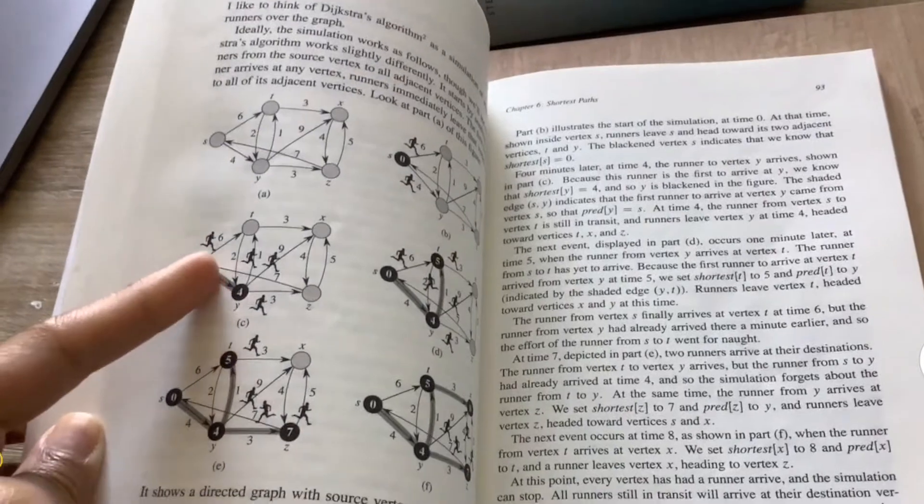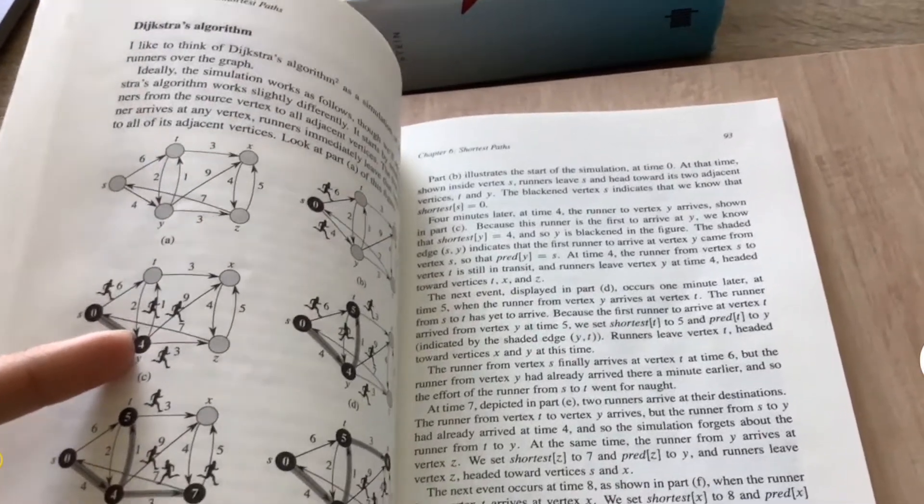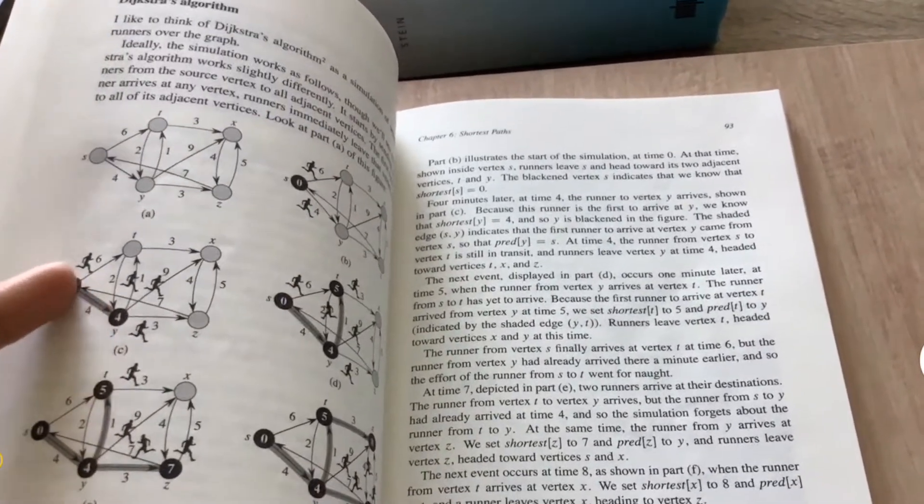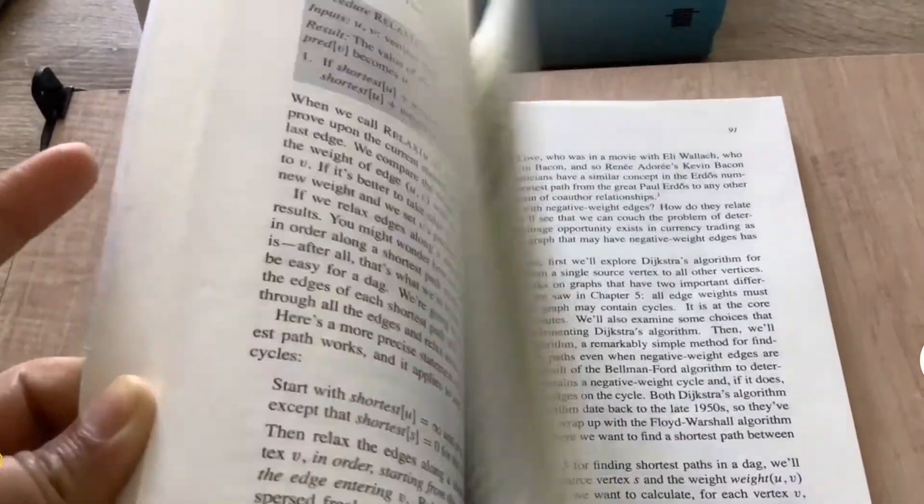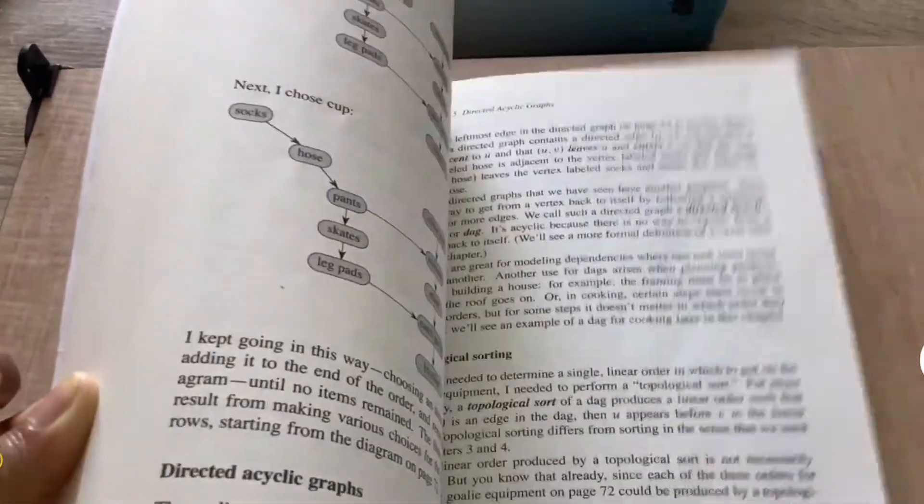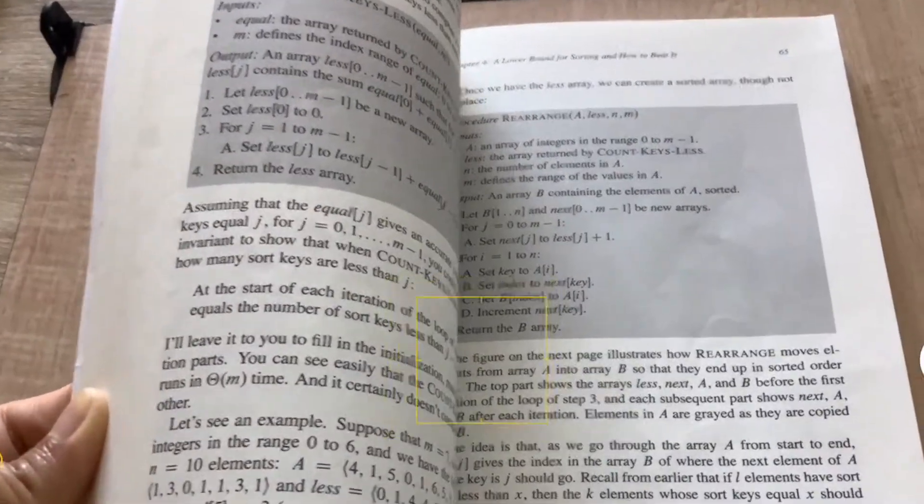Yeah, this is also a really interesting example for Dijkstra, the way the author demonstrated like how you can find the shortest algorithm by just having multiple runners on the graph, so that's also an interesting idea. So overall, yeah, definitely a book that is worth a read, I highly, highly recommend it.